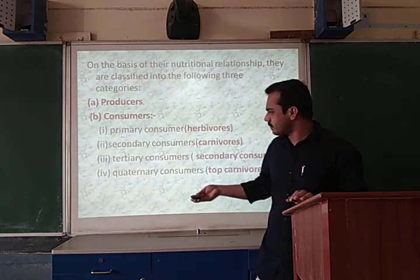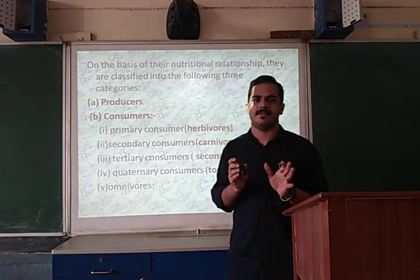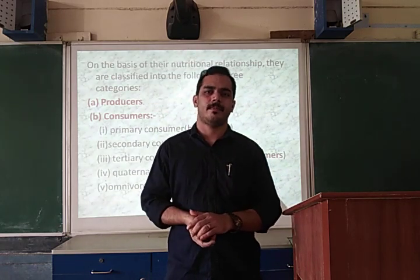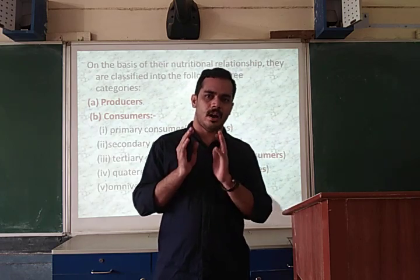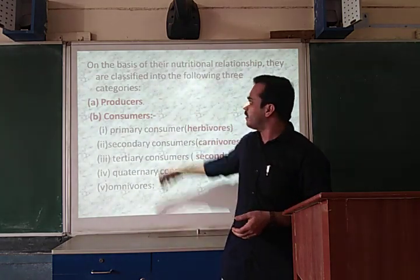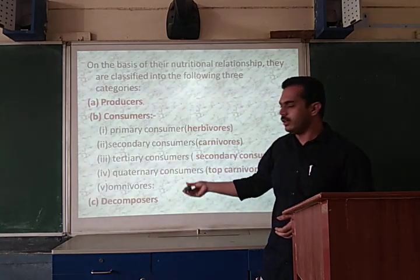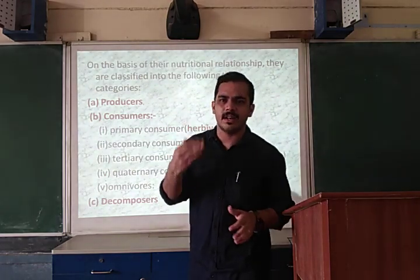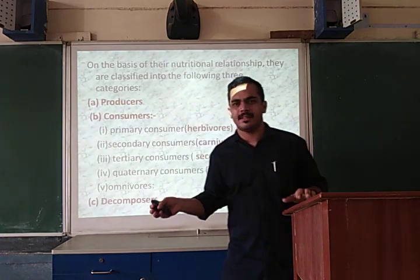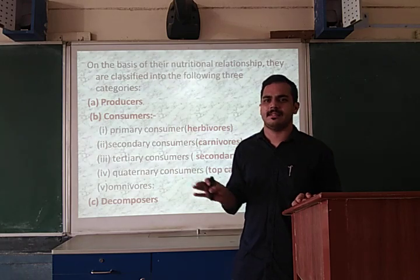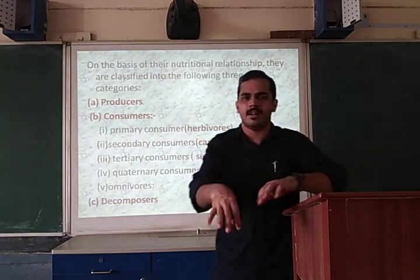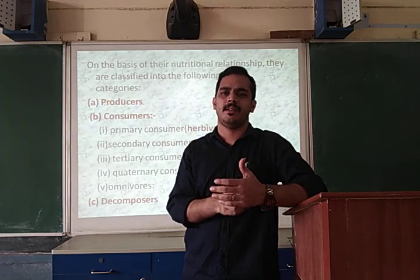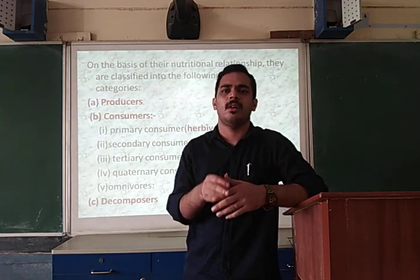The last type is omnivores. Omnivore organisms or species always depend on both categories — flesh and grass. Organisms that consume both are called omnivores. The third main category in the nutritional classification is decomposers. Decomposers are organisms that always depend on dead and decaying matter. Some examples of decomposers are bacteria and fungi. Whenever there is dead and decaying matter, decomposers help decompose that matter and mix it back into the soil.